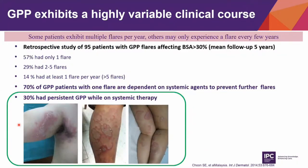GPP is a very unpredictable disease and exhibits highly variable clinical course. Some patients may have multiple flares per year — I have patients who have more than 20 flares per year, two to three flares every month — while others may experience a flare every few years. In our analysis of 95 patients with acute GPP flare affecting body surface area of at least 30%, 57% had only one flare, 29% had two to five flares, and 14% had at least one flare per year on average follow-up of five years.